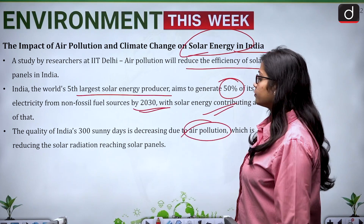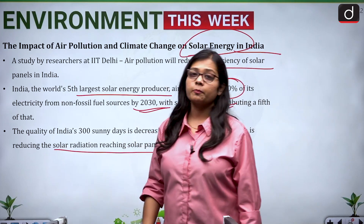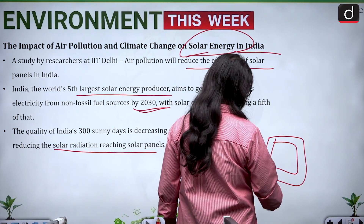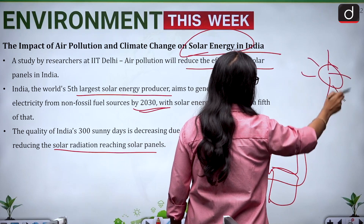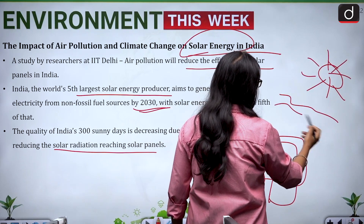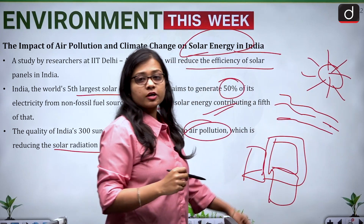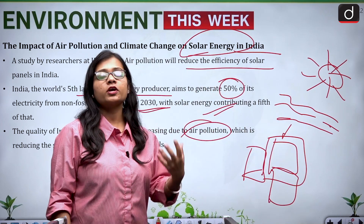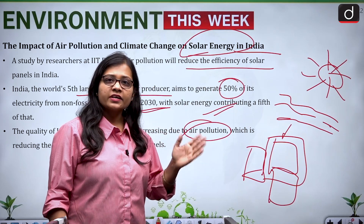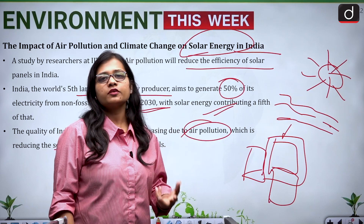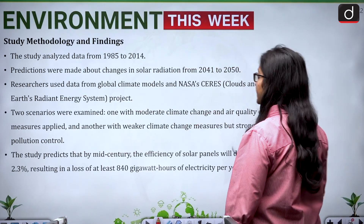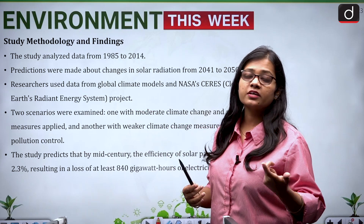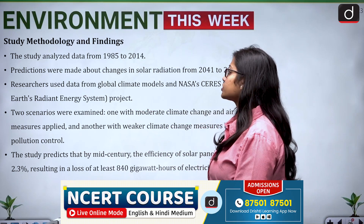Imagine solar panels receiving sunlight from the sun — if the air is very polluted, the sunlight reaching the panels is reduced in intensity because of the polluted air, creating a problem for solar energy generation. India is a country moving very rapidly towards increasing electricity generation from solar panels, making this a serious concern.